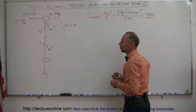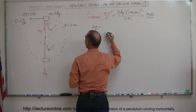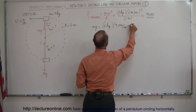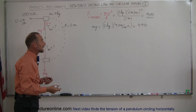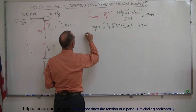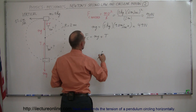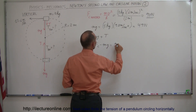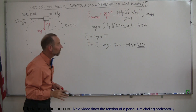Now let's find the weight of this object. Mg = 5 kg × 9.8 m/s² = 49 N. That is not enough to provide the 90 N required for circular motion, which means the tension in the string must make up the deficit. So F_C = Mg + T, which gives us T = F_C − Mg = 90 N − 49 N = 41 N. The required tension in the string at the top is 41 N.